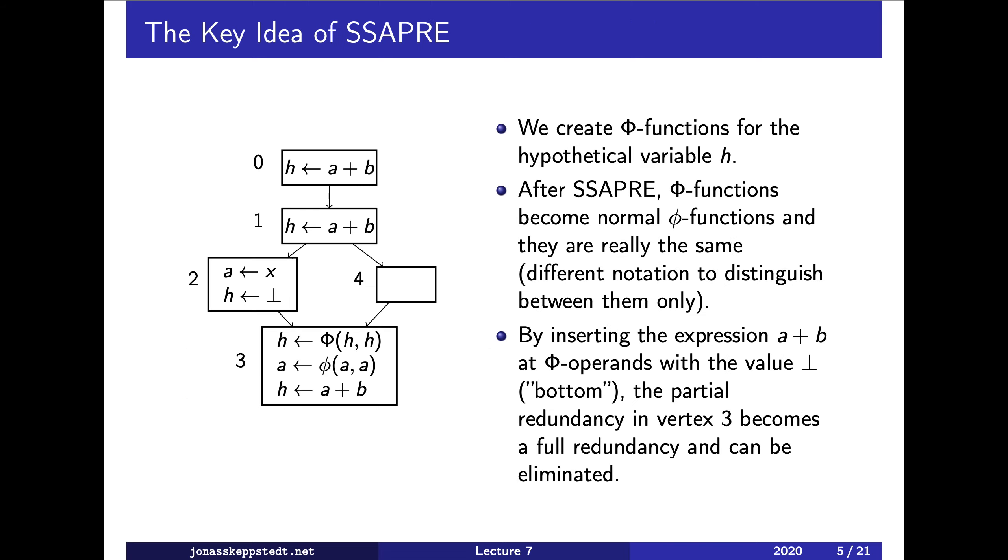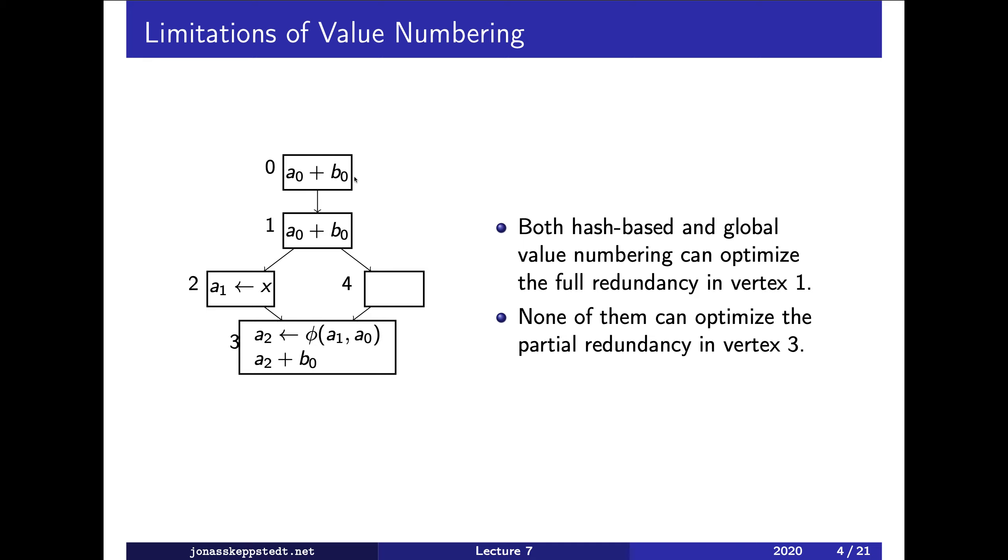I said previously that when we translate the program to SSA form, the renamed variables can just be temporaries, but SSA PRE needs to know which ones are which, what they originate from. So it's not sufficient to only say temporary one plus temporary two, etc. We need to know that they are from a and from b.